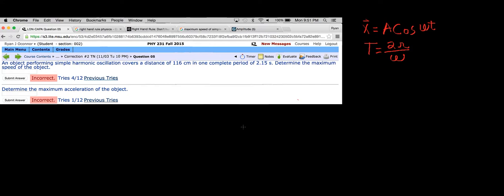Okay, so we're given an object that performs simple harmonic oscillation, covering a distance of 116 centimeters in one complete period of 2.15 seconds. We need to determine the maximum speed of the object and the maximum acceleration of the object.